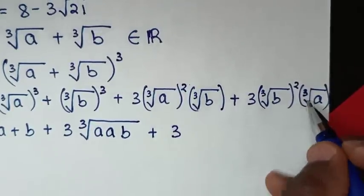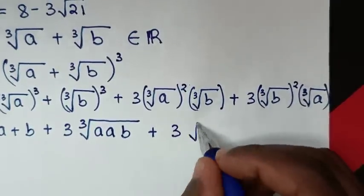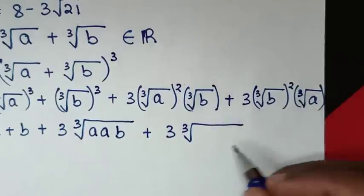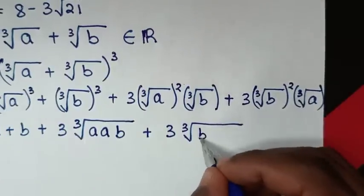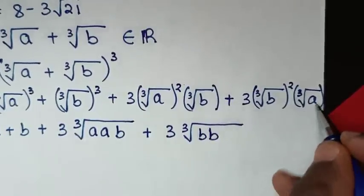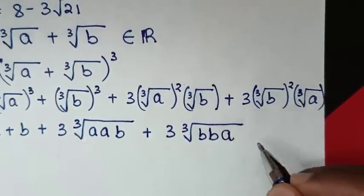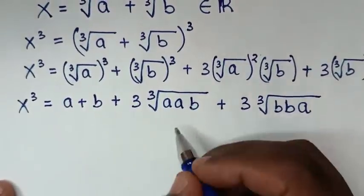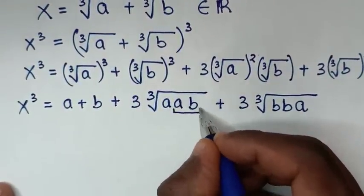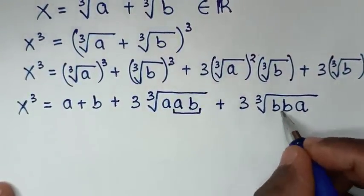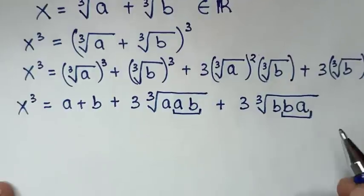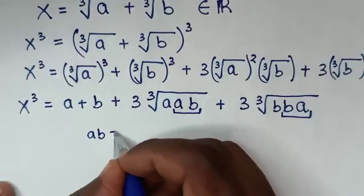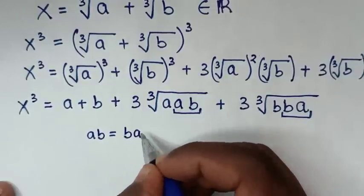We have a common cube root in both terms, so we can group them. Note that a times b is the same as b times a. So let's find the product a times b.